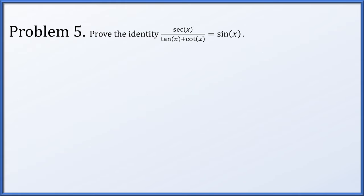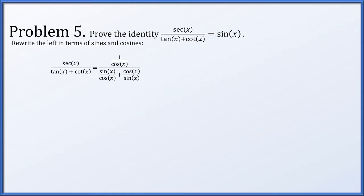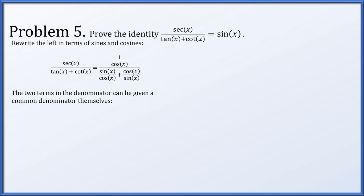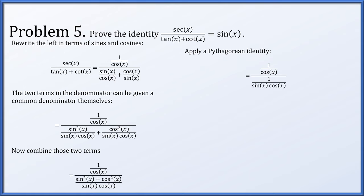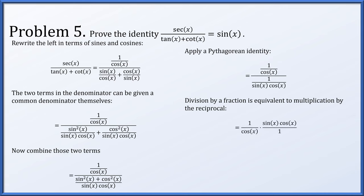Lastly, let's prove the identity secant x over tan x plus cotan x is always equal to sin x. Rewriting in terms of sines and cosines: 1 over cos x, all over sin x over cos x plus cos x over sin x. The two terms in the denominator are given a common denominator of sin x times cos x, generating sin squared x plus cos squared x in the combined numerator. Applying the Pythagorean identity, we get 1 over cos x over 1 over sin x cos x. Dividing by a fraction means multiplying by the reciprocal: 1 over cos x times sin x cos x over 1. We cancel the shared factor of cos x, leaving just sin x.